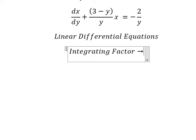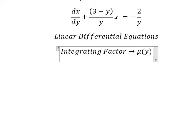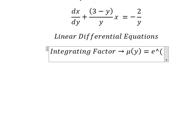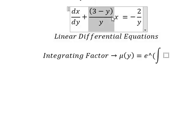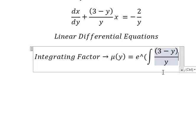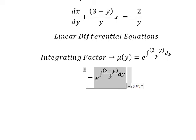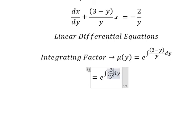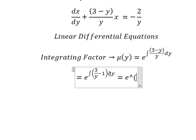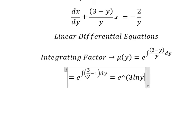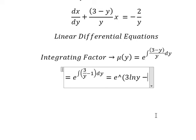So we can use the integrating factor. We need to find mu of y, which equals e to the power of the integration. The coefficient next to x is for the integrating factor. We have three divided by y, y divided by y, so we have three over y, minus one. The integration of three over y gives us three ln of y.